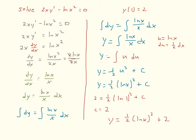You might ask why I don't bring that 2 down and multiply the 1/2. The difference is that in the original equation the exponent was on x, while here it is on the natural log function itself, so I cannot apply the log property to it. That is the solution to this differential equation.